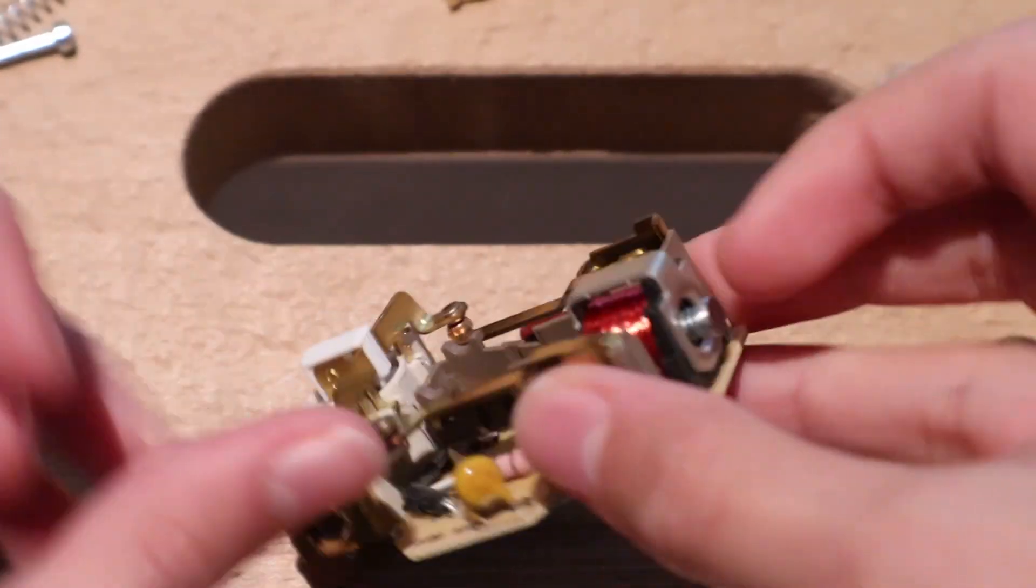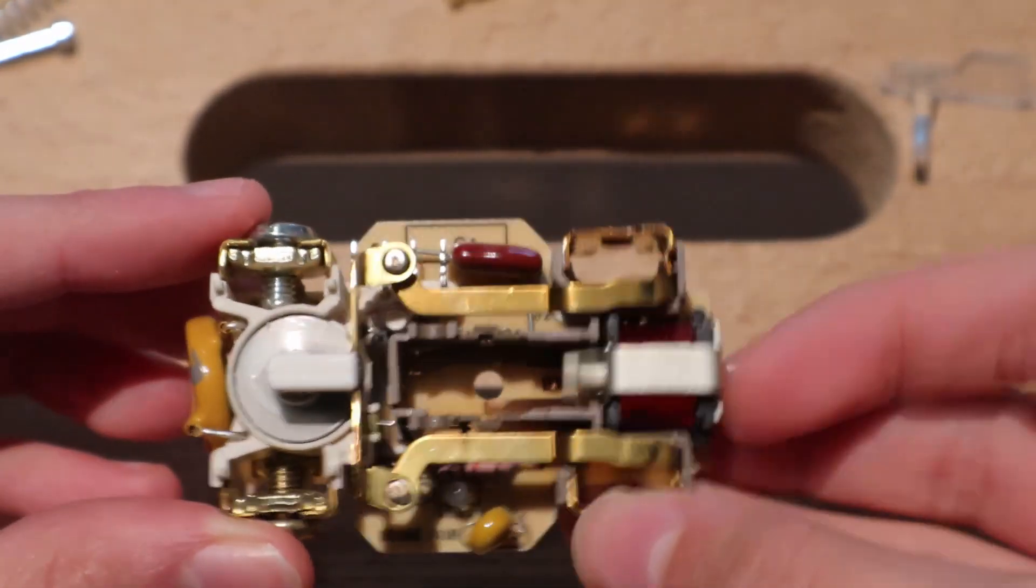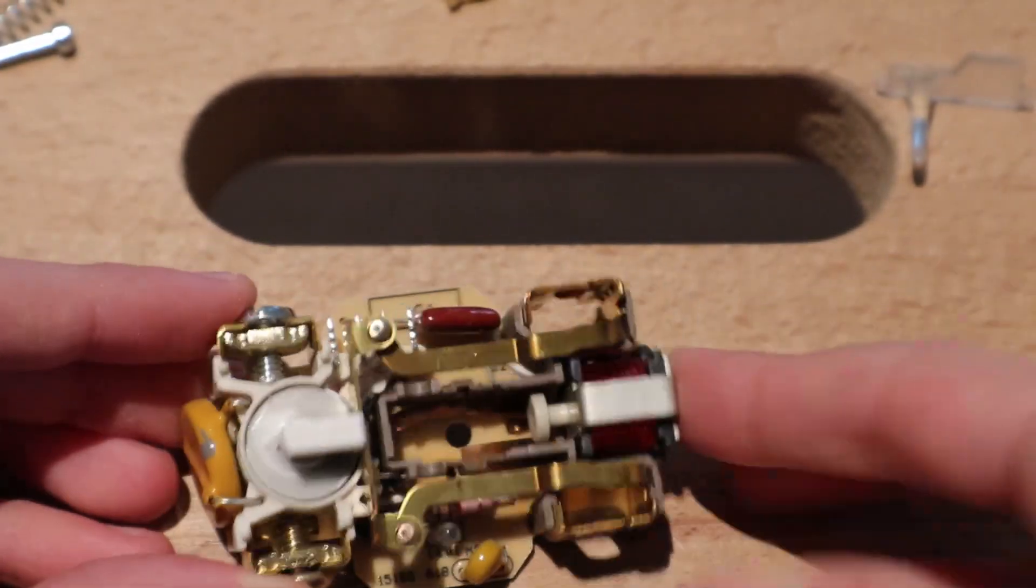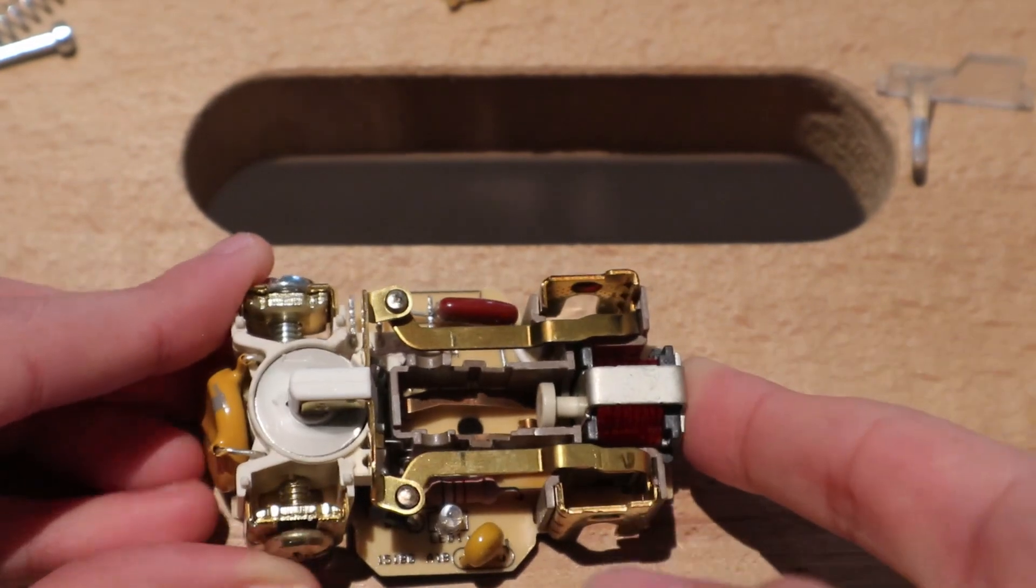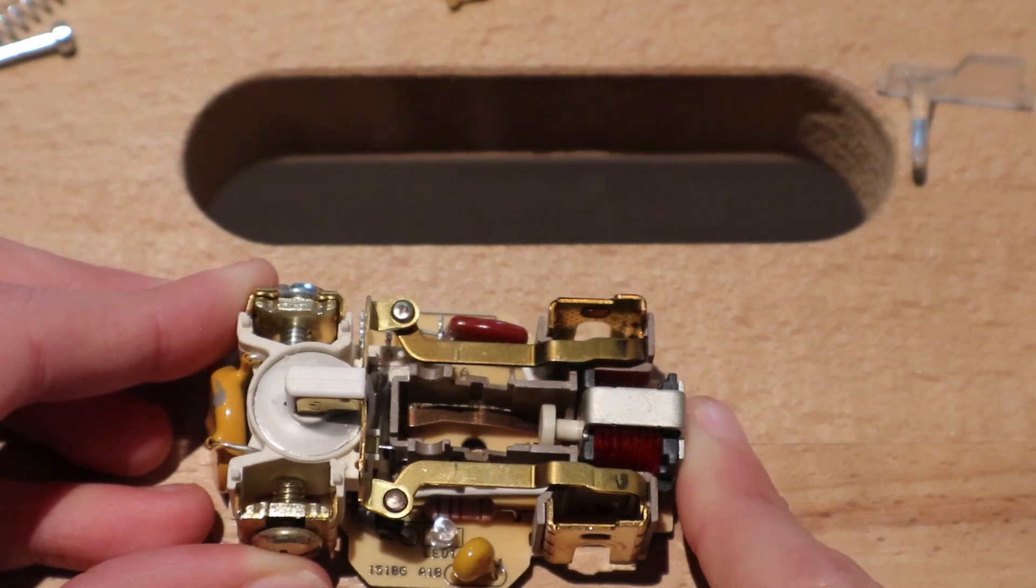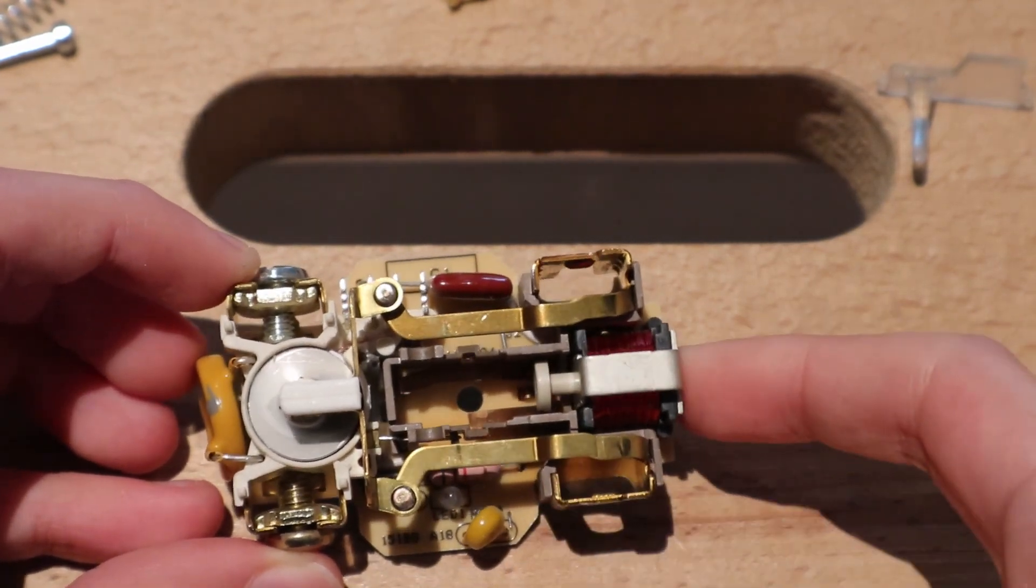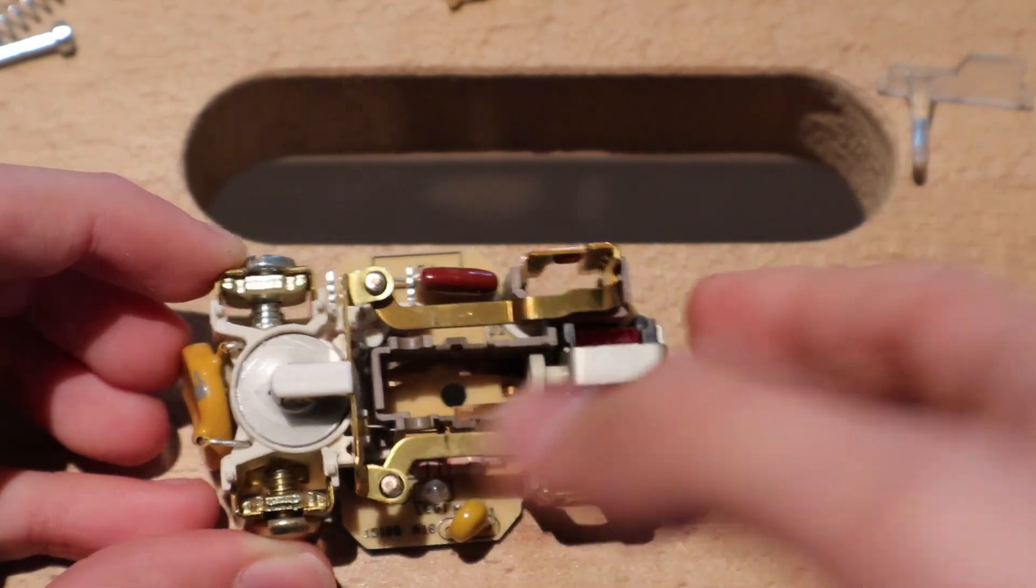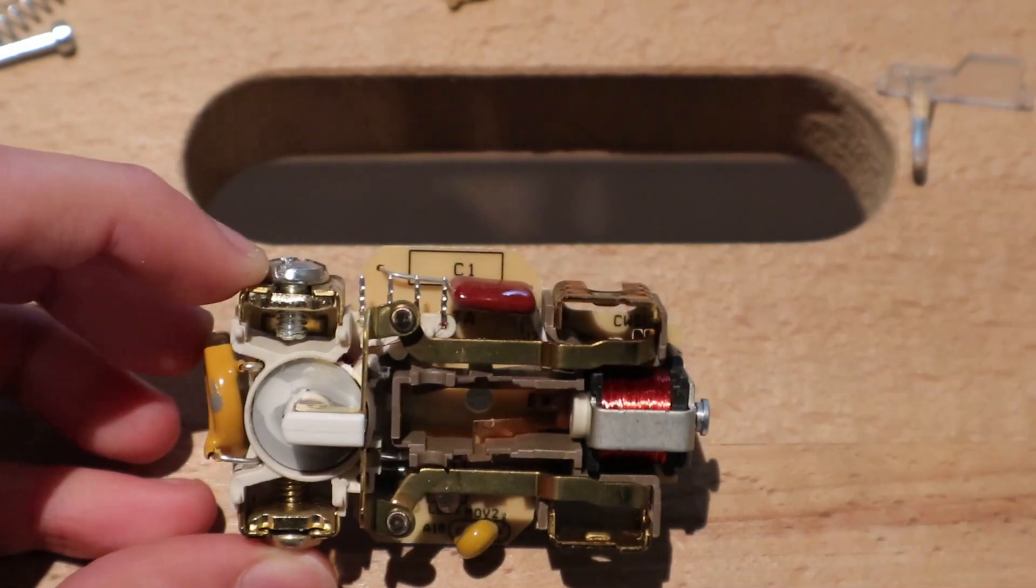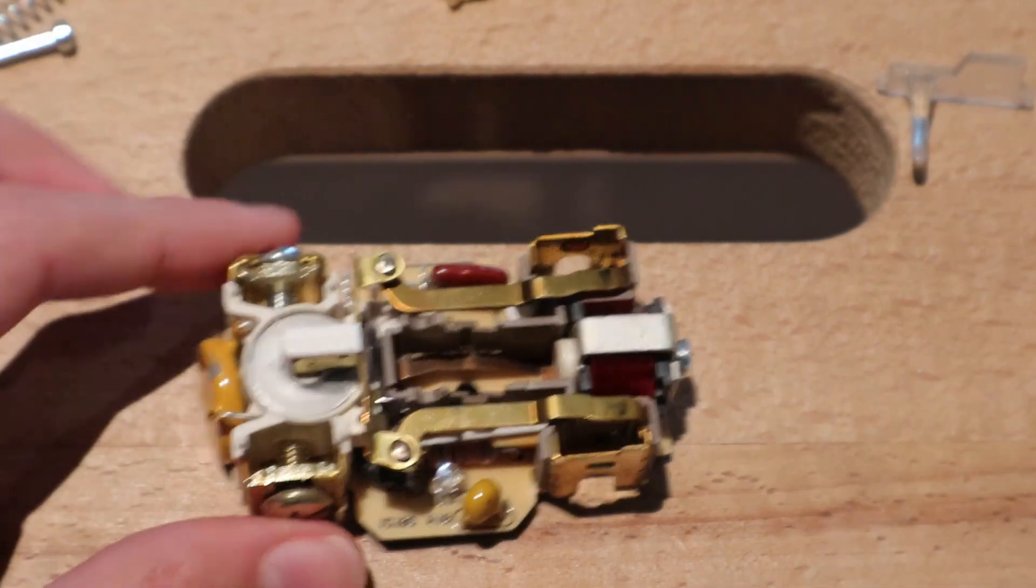That solenoid thing is a plunger that pushes in. That is probably what holds the reset button in. And when the outlet failed by not being able to reset, this plunger probably opened like this and then couldn't hold the reset button in.